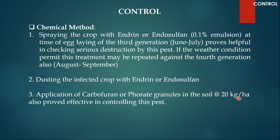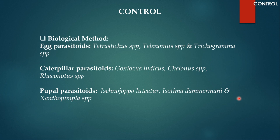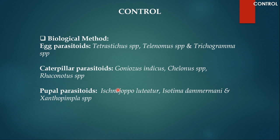Chemical pesticides should be avoided because they are harmful for plants as well as consumers of sugarcane, so biological methods are always preferred. There are a number of egg parasitoids, caterpillar parasitoids, and pupal parasitoids available. These can be released in the field, or if naturally occurring parasitoids are already present, their development should be encouraged. By protecting these natural enemies of Scyrpophaga nivella, you can control the pest very effectively.